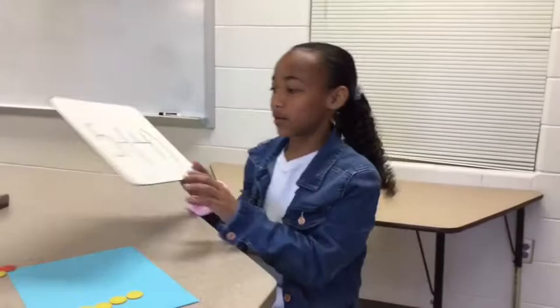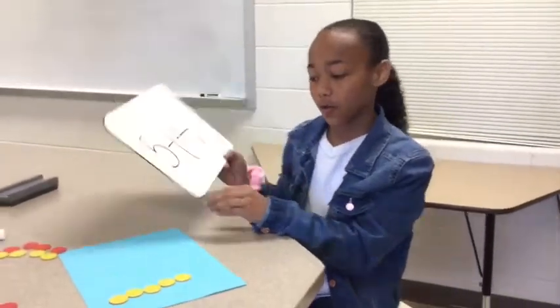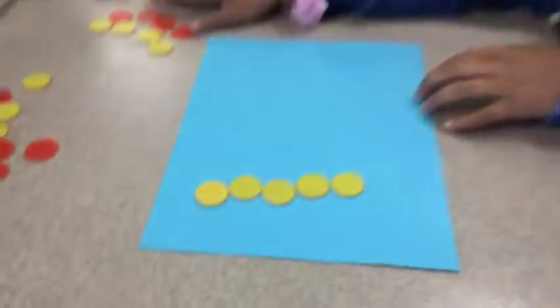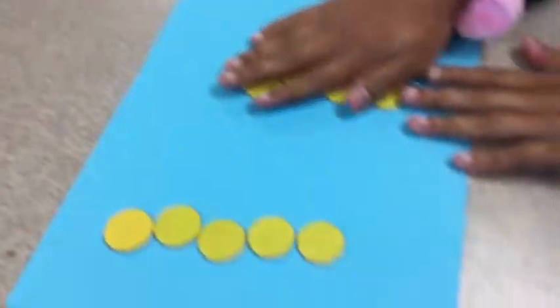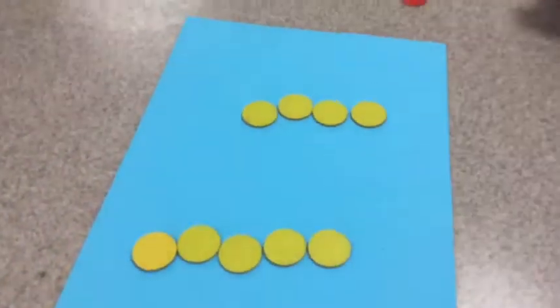And so my next problem is 5 minus negative 4, but we don't have negative 4 to take away, so we have to add pairs of zero. Then you take away the negatives, and you have 9.